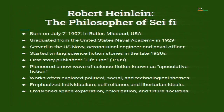Beginning with Robert Heinlein — the philosopher of science fiction. We call him the philosopher for one reason: most of his science fiction works have a lot of reflections. Whenever a person is reflecting on a particular topic, he is balancing the pros and cons. Whether it is good or bad to have a certain system in society, whether it is spiritually or ethically correct to pursue a certain ambition.